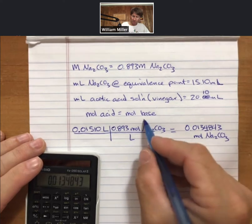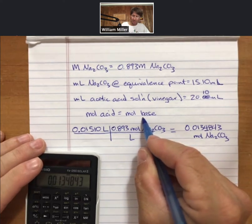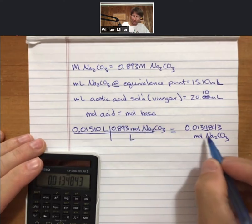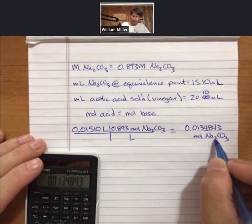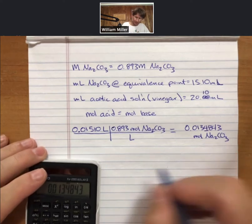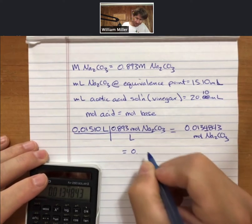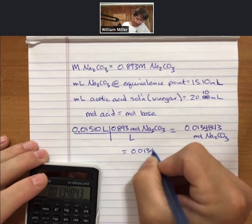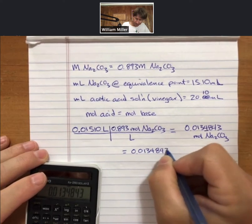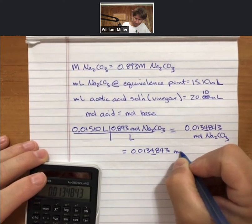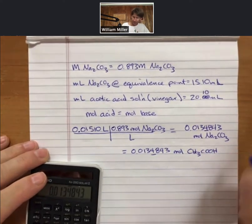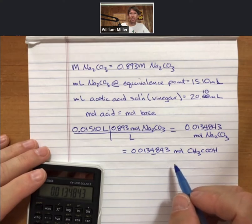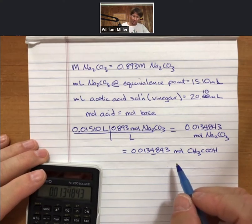This moles of sodium carbonate is my moles of base. It is equal to my moles of acid, so now I will write equals this number moles acetic acid. And that's the beauty of the equivalence point, is I can say these two numbers are equal to each other.